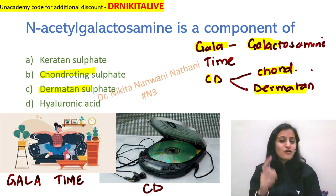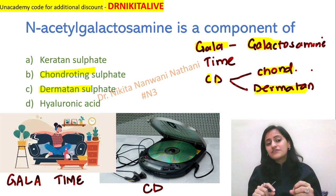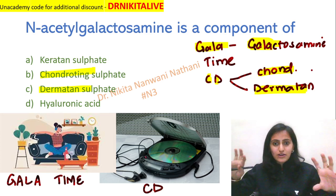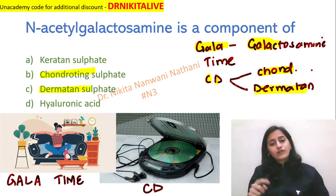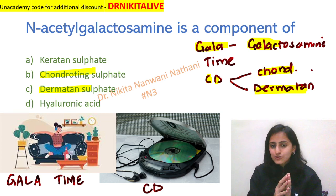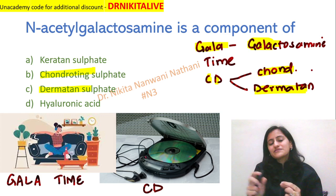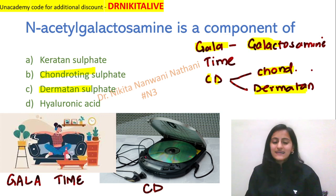So it's a homework for you — let me know in the comments how will we differentiate chondroitin sulfate from dermatan sulfate. What is that different component in the two that helps differentiate chondroitin from dermatan? Common is N-acetylgalactosamine — what is the other unit which is different in the two? Do let me know in the comments, and thank you so much for watching.